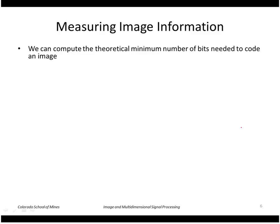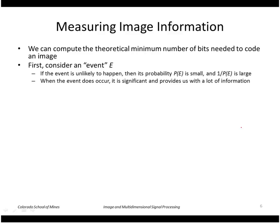One way to measure information, we're going to look at how to do that. We're going to compute the theoretical minimum number of bits needed to code an image. First we need to consider some concepts from probability.